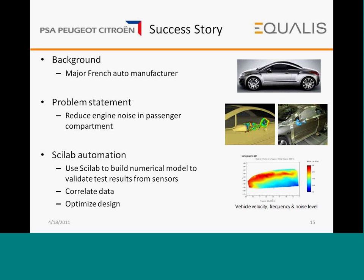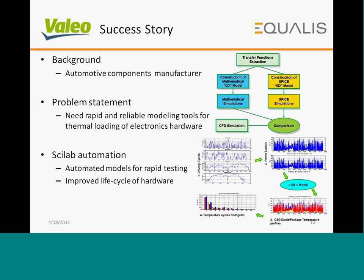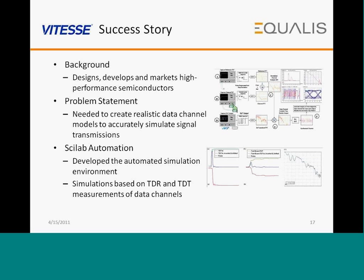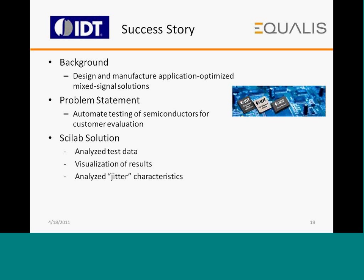Valeo, another French automotive company, is using Scilab for building modeling tools to study thermal modeling of electronic hardware — using it for automation, developing models for rapid testing, and improving the life cycle of hardware that would otherwise fail due to thermal loads. A semiconductor company used Scilab for simulations of testing systems — developing virtual channels and performing simulations based on TDR and TDT measurements of data channels. IDT, an electronics company designing application-optimized mixed signal solutions, used Scilab to automate testing of semiconductors for customer evaluation, analyzing test data, visualizing results, and analyzing data characteristics with signals.